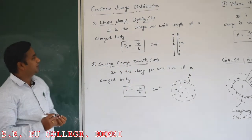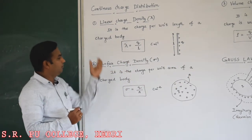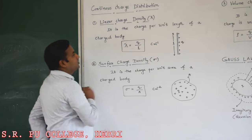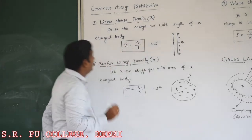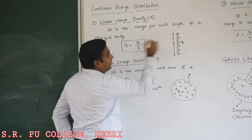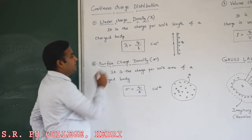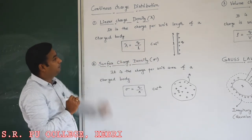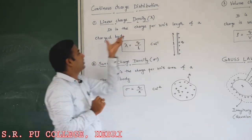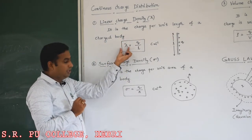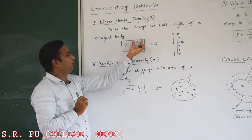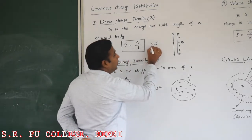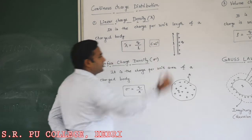In case of continuous charge distribution, we are going to discuss three important parts. The first important part is linear charge density, denoted by the letter lambda. It is the charge per unit length of a charged body, denoted as lambda equals Q divided by L. The unit for linear charge density is coulomb per meter.